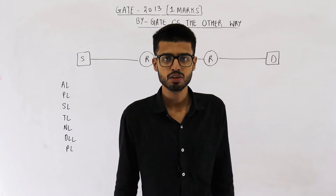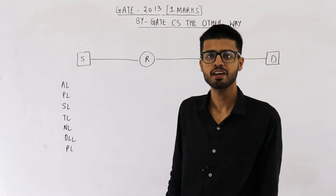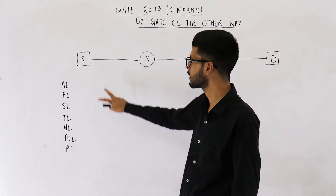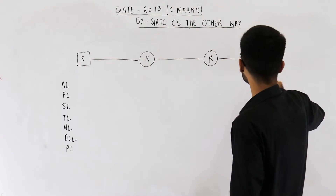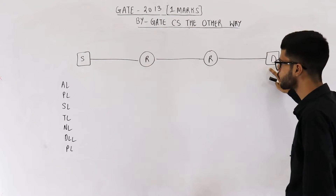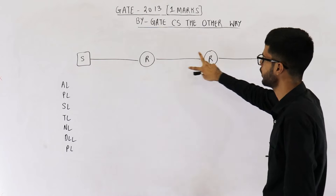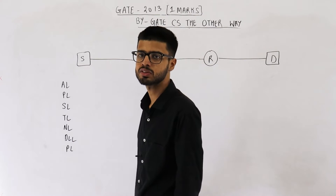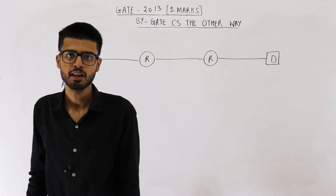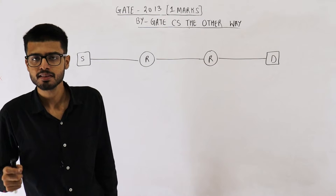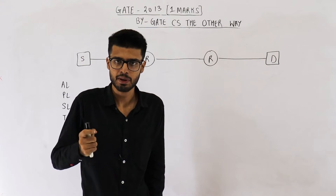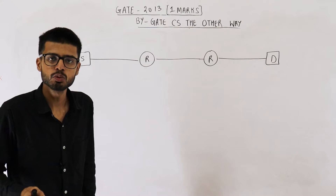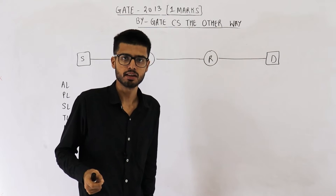Hello students, welcome back. This question is from the GATE 2013 exam. In the question, they say machine S is connected to machine D using two routers. S wants to send some packet to machine D. The question is: how many times will this packet visit the network layer, and how many times will this packet visit the data link layer?